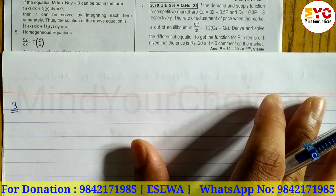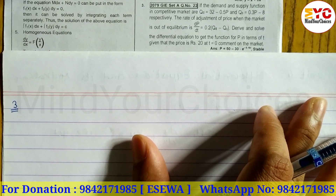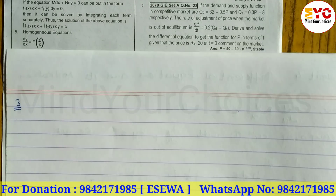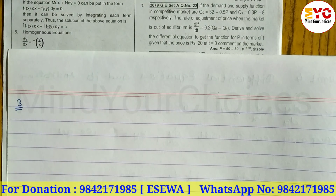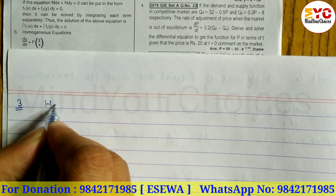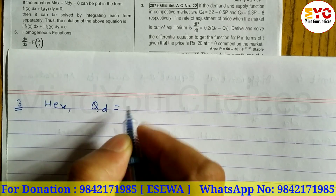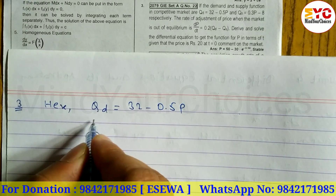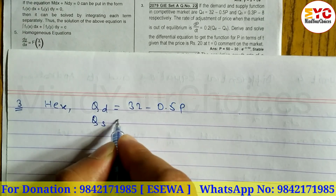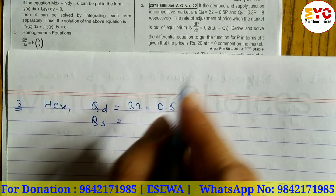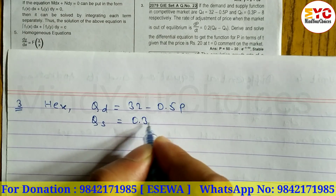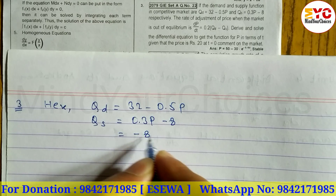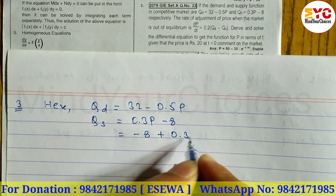The market is stable. Let's start. The demand function is qd = 32 − 0.5p, and the supply function is qs = −8 + 0.3p.